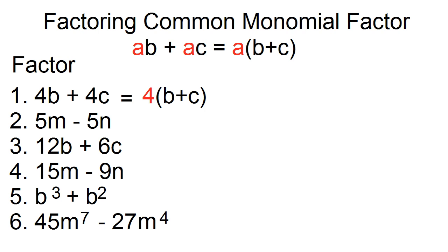Number 2. Factor 5M minus 5N. The common monomial factor is 5. 5M divided by 5 is M, minus 5N divided by 5 is N. The factors are 5 and the quantity M minus N.